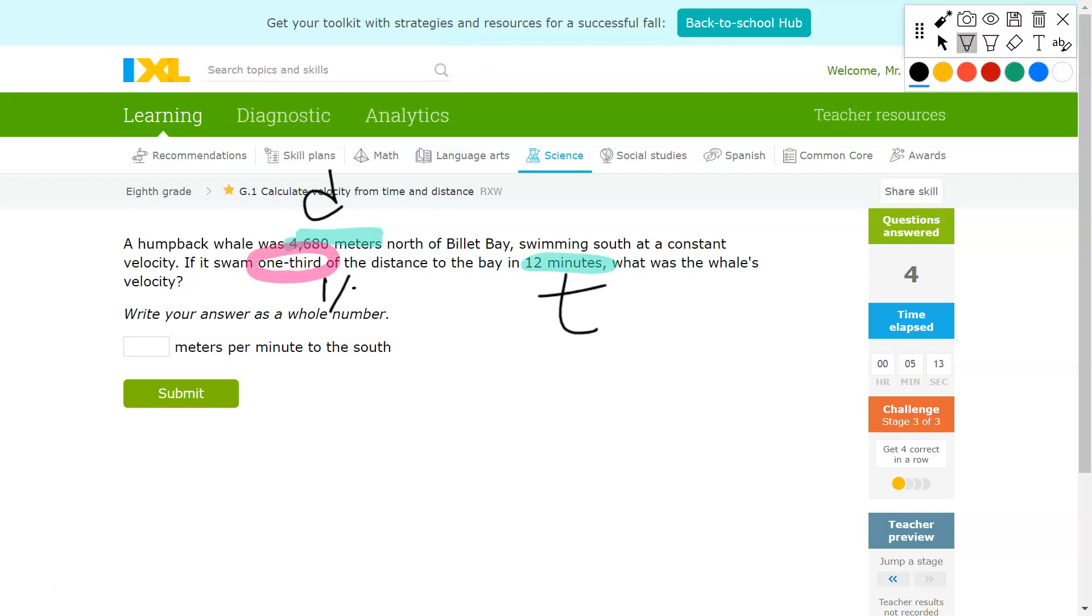It's asking specifically for the whale's velocity. You know that it swam one third of the distance to the bay in 12 minutes. So you have to take this value of 4,680 meters and divide that by 3 in order to get the total amount of distance it covered in 12 minutes. This equals 1,560 meters.